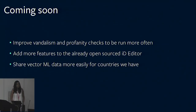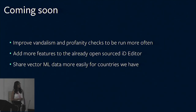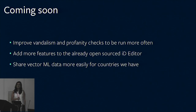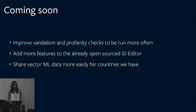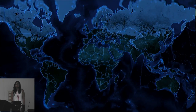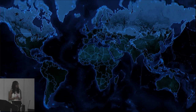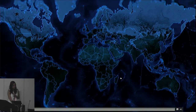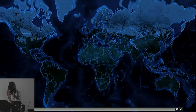What's coming next? We want to focus on improving vandalism detection so that we can run more checks, do them faster, and be more efficient. We're always adding more features to the open source iD. We're also looking to find ways that we can share the vector data more easily, so when partners come to us, we're not putting it in a Dropbox — there's a more efficient way to share that data. We also showed the Thailand progression from last year — we've had great community support and learned a lot from continuously communicating with them about how to tag, and we're going to quickly show a video of what that progression was.